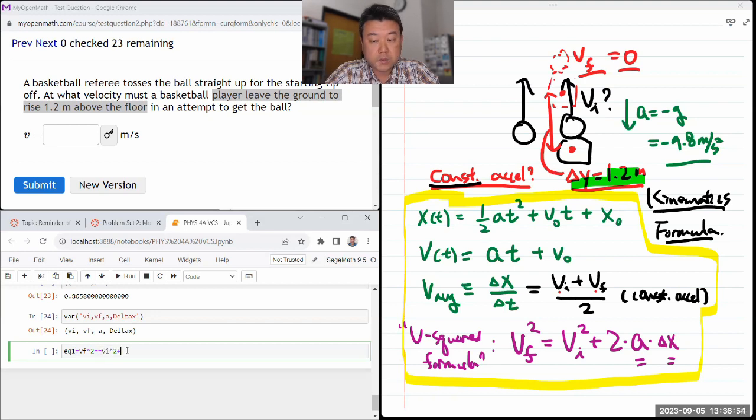vi squared plus 2 times acceleration times delta x, and I'll put in the right signs for acceleration and delta x so that they end up in the right values. So I'm assigning this equation as the value for this variable.